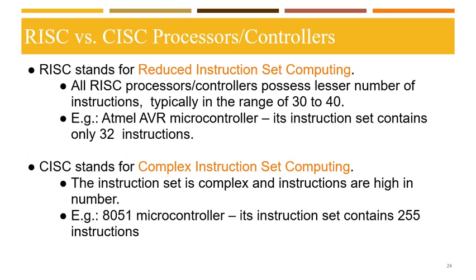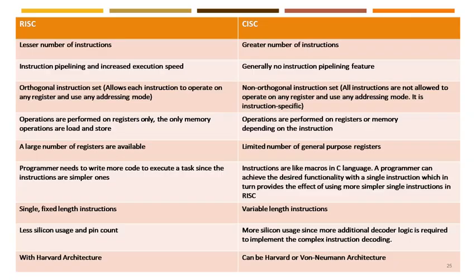Next we shall learn the difference between RISC and CISC processors. RISC stands for Reduced Instruction Set Computing — all RISC processors possess fewer instructions, typically around 30 to 40. For example, the Atmel AVR microcontroller has an instruction set of around 32 instructions. CISC stands for Complex Instruction Set Computing — the instruction set is complex and high in number. For example, the AT89C51 microcontroller's instruction set contains 255 instructions.